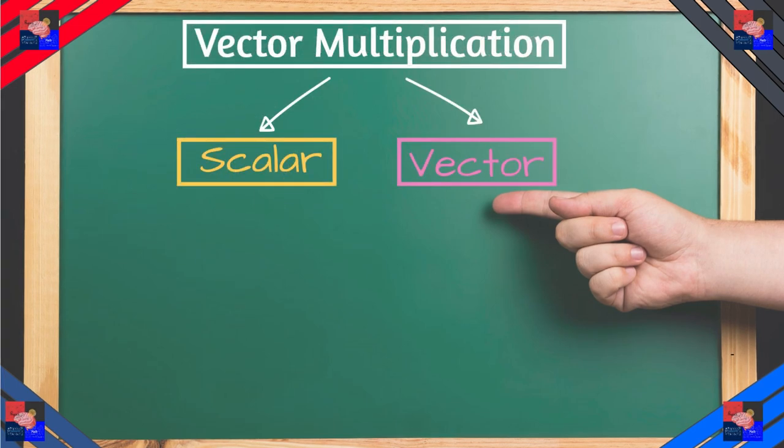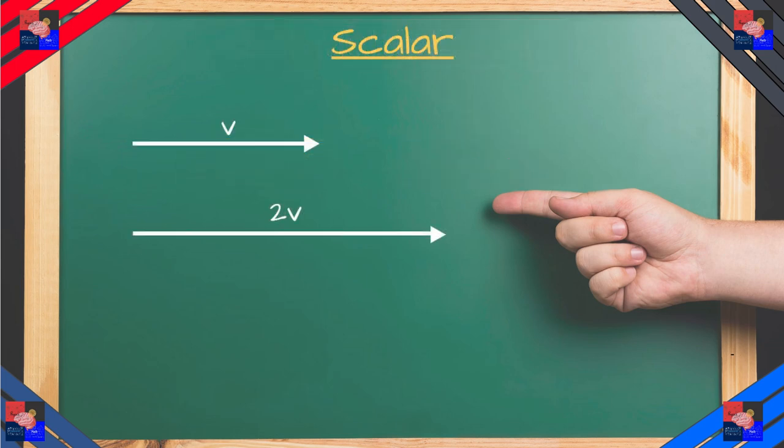As for vector multiplication, there are two ways to multiply vectors: multiply by scalar and multiply by vectors themselves. Multiplying by scalar is basically taking something V1 and multiplying it by a specific number, so like doubling it V1 to V1.